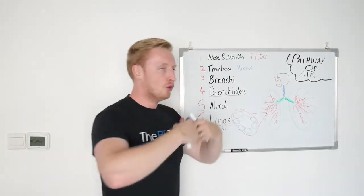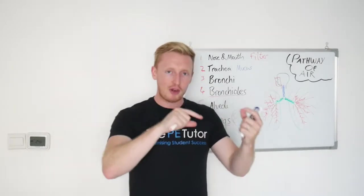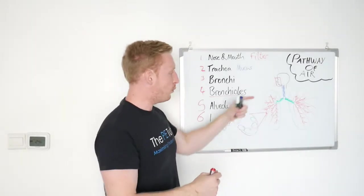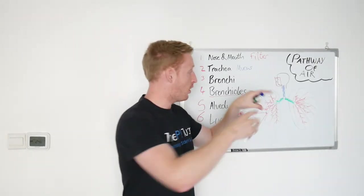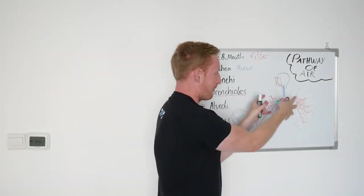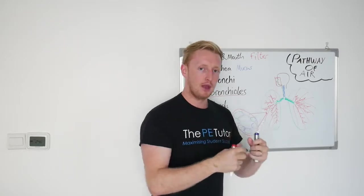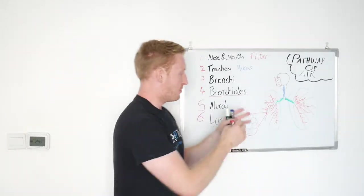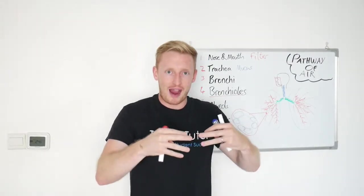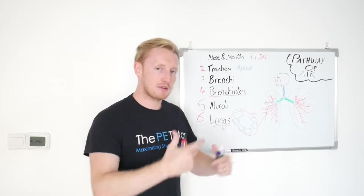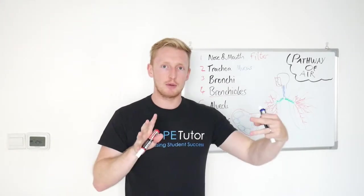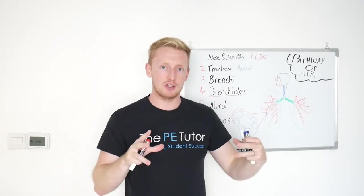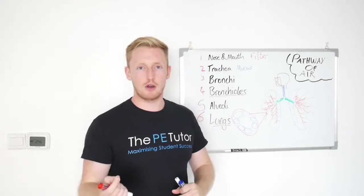That's important because in order to breathe, we rely on pressure changes, and the way that we create pressure changes inside of our trunk or our thoracic cavity area is by moving the rib cage. By moving that into different positions, the lungs are then dragged behind the ribs because they're attached, and they change shape. As their shape changes, so does the air pressure inside of them.